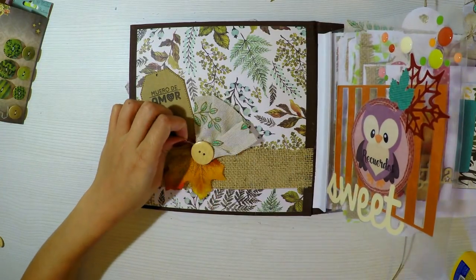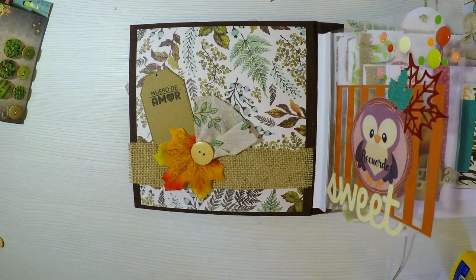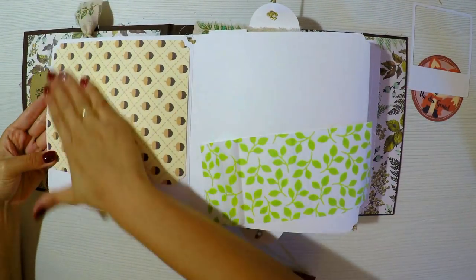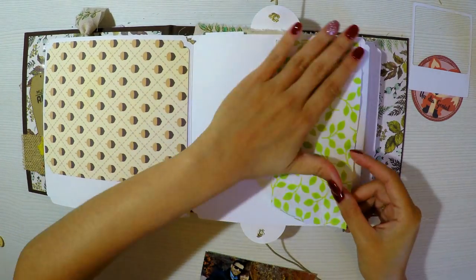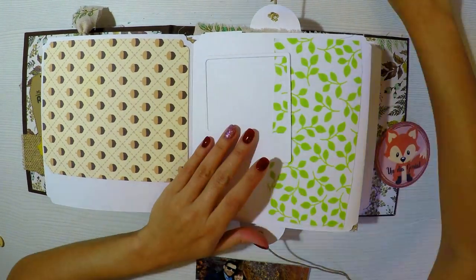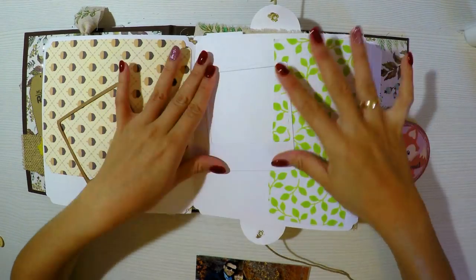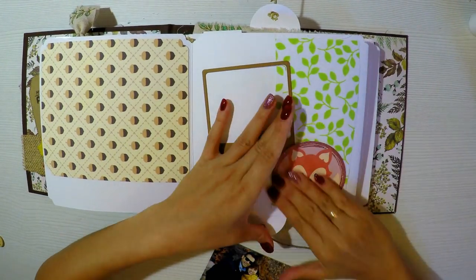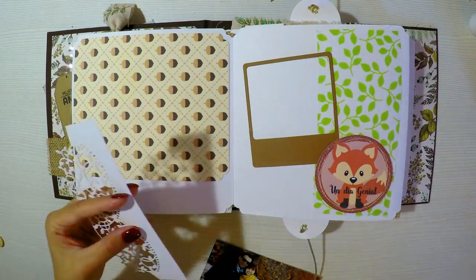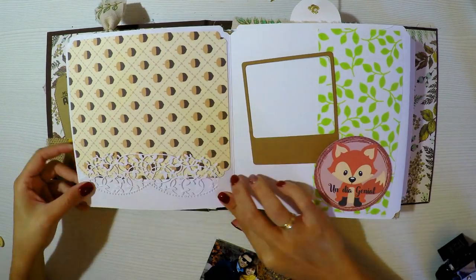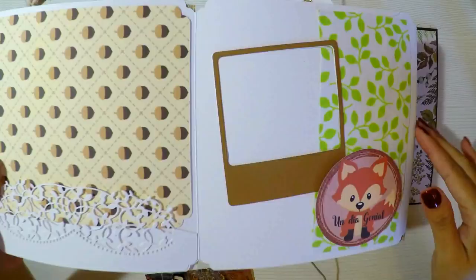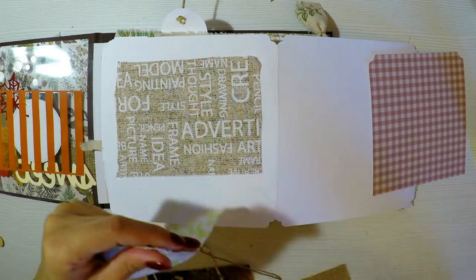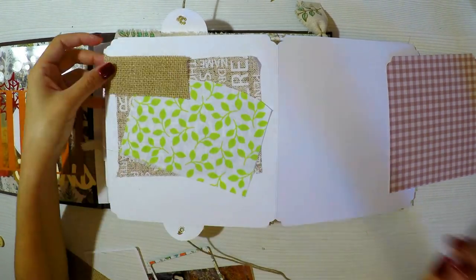Estos botoncitos de aquí me los regaló mi tienda de arte, me los mandó en un pedido que hice y son súper monos. Me gustan mucho. Como ven aquí estoy agregando un trocito de papel de avellanas que es de nueces, que es de la printable. Es un printable, lo he impreso. Y luego agrego un marquito de Polaroid. Este marquito de Polaroid lo hice con la Sizzix, con la maquinita Big Shot o la troqueladora de papel, igual que la base de abajo. Les estoy mostrando una fotito de otoño que me hice hace un par de años en Barcelona. Súper bonita.